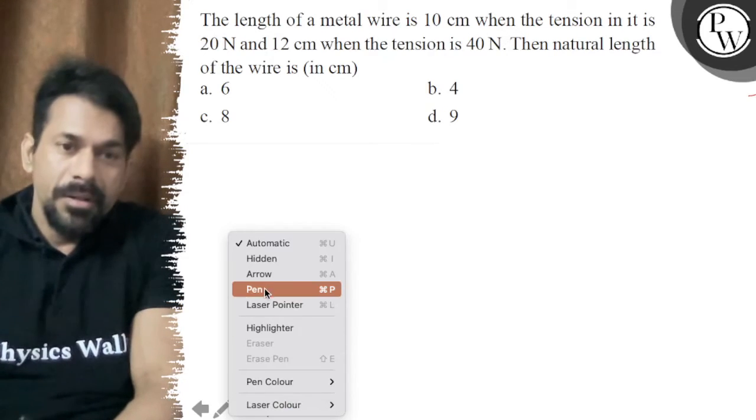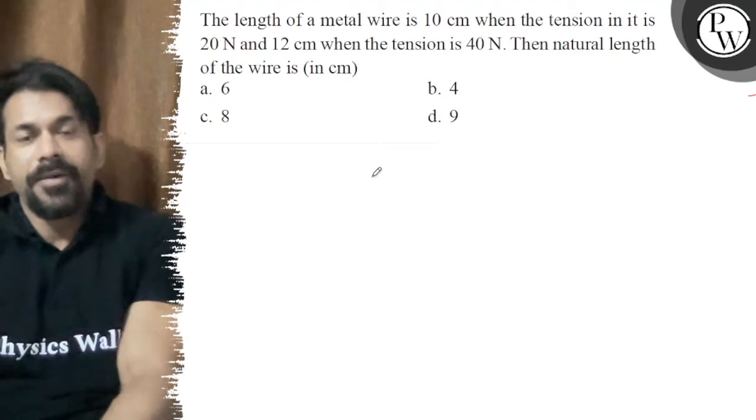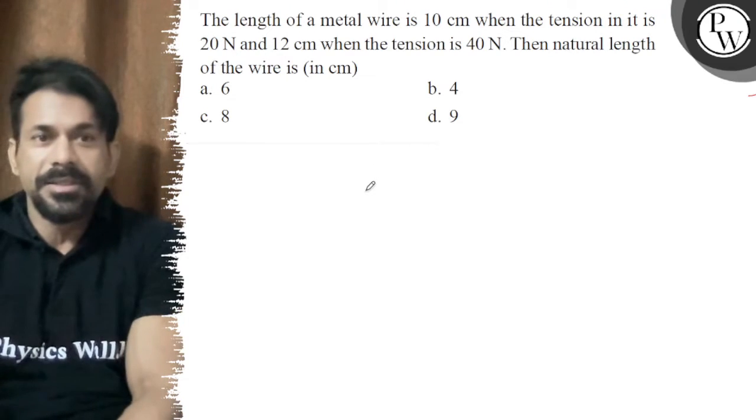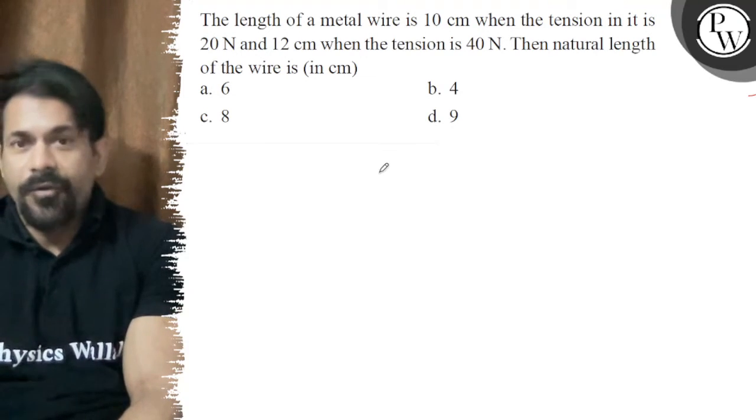Hello, let's see the question. The length of a metal wire is 10 centimeters when the tension in it is 20 N and 12 centimeters when the tension is 40 N.